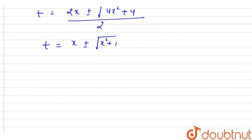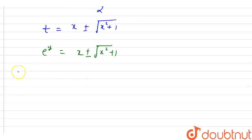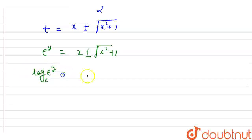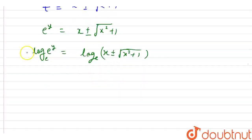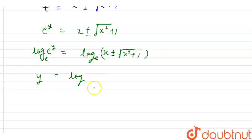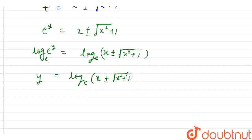Since t equals e raised to the power of y, we have e raised to the power of y equals x plus or minus the square root of x squared plus 1. Applying log base e to both sides and using the property that log base e of e raised to the power of y equals y: y equals log base e of (x plus or minus the square root of x squared plus 1).